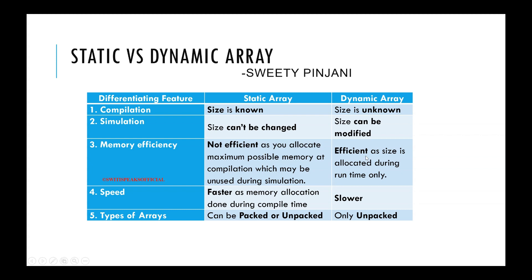The fourth point is speed. Since memory for static array is allocated during compile time, it is possible to represent them in contiguous memory locations, which makes it faster. But in case of dynamic array, the size is allocated at runtime, so you can't guarantee whether a contiguous set of memory is available or not. If contiguous memory is not available, it will be allocated in non-contiguous memory, thereby making it slower.